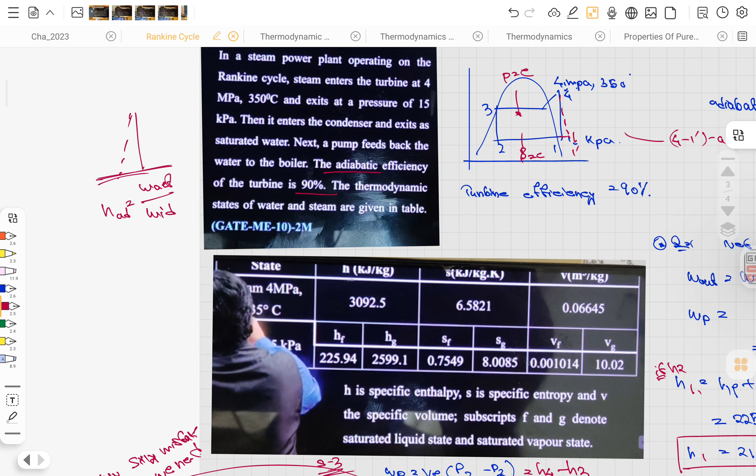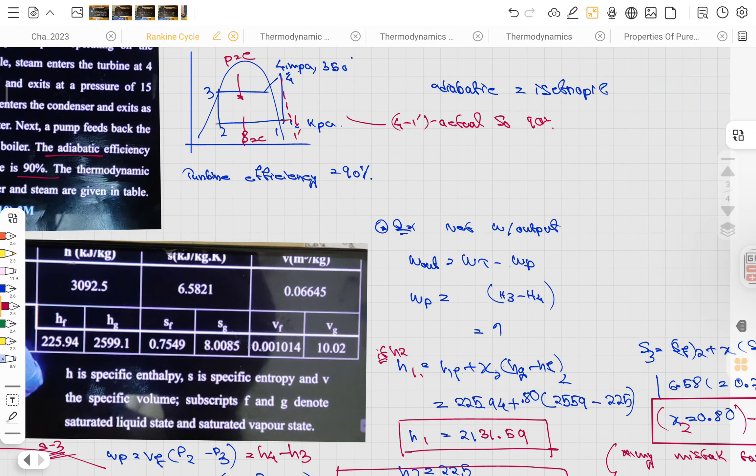The next thing to take care of is the work output: w turbine minus w pump. In the case of the turbine, there's an adiabatic actual process that has been described. To find that, we have to take the actual efficiency, but we need to find the points like 1, 2, 3, and 4.